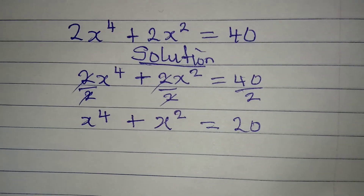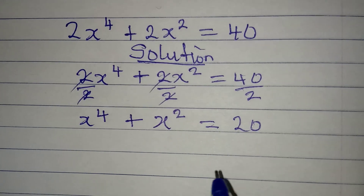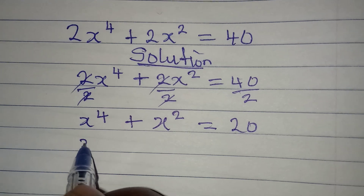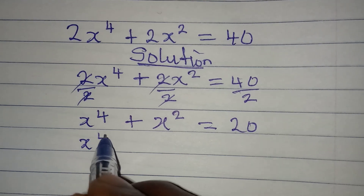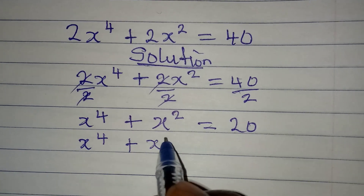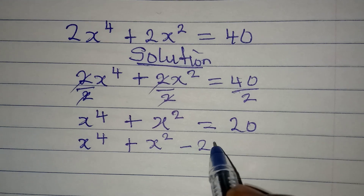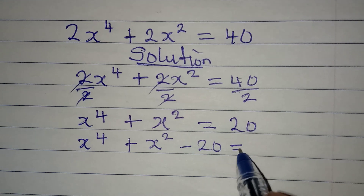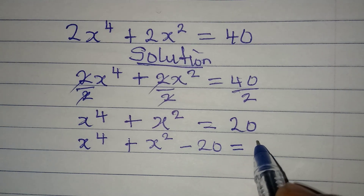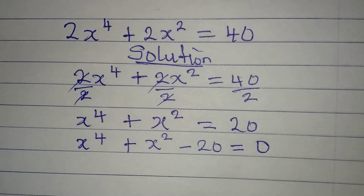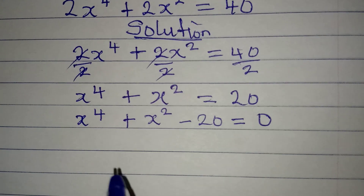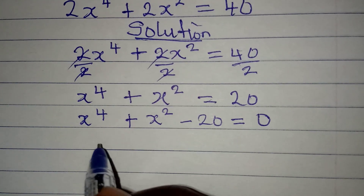The next thing is to take everything to the left-hand side: x to the power of 4 plus x squared minus 20 is equal to 0.